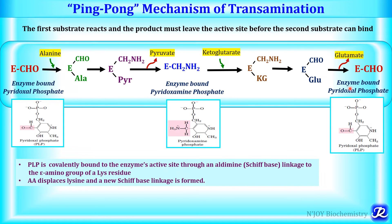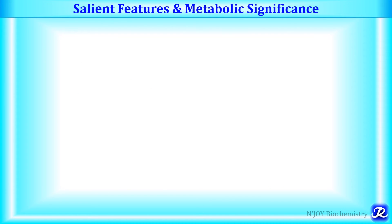Finally, the enzyme-bound pyridoxal phosphate remains. In this transamination reaction, pyridoxal phosphate acts as a carrier of amino group — it carries the amino group from alanine and donates it to alpha-ketoglutarate to form glutamate, while pyruvate is also formed. So alanine combines with alpha-ketoglutarate to form pyruvate and glutamate. This is the ping-pong mechanism of the transamination reaction.